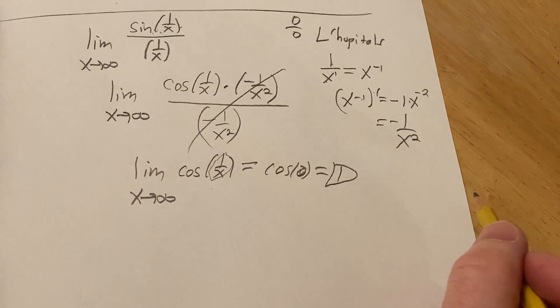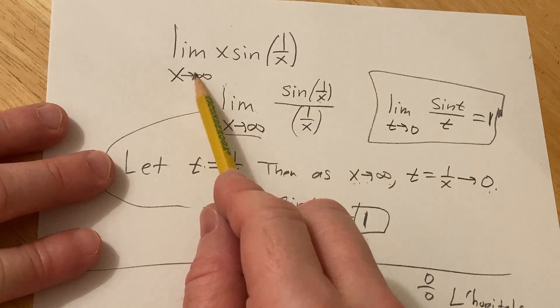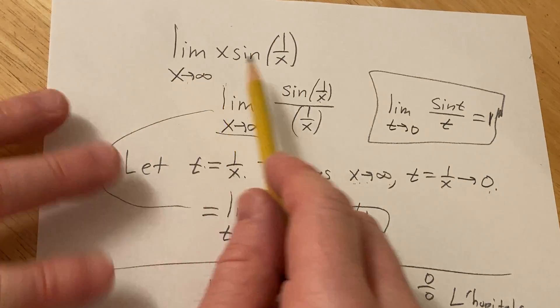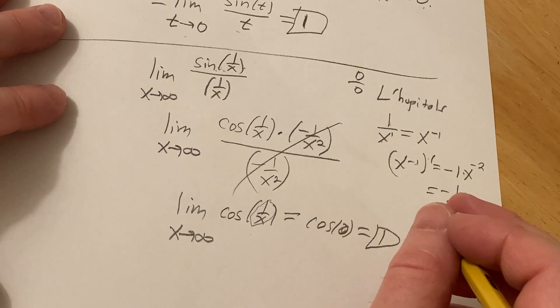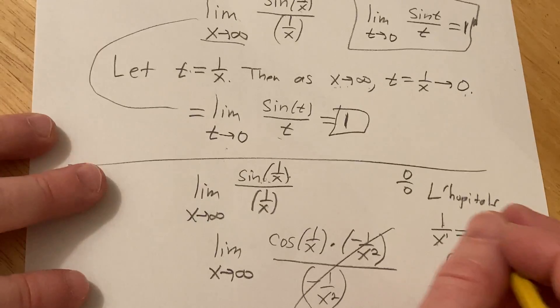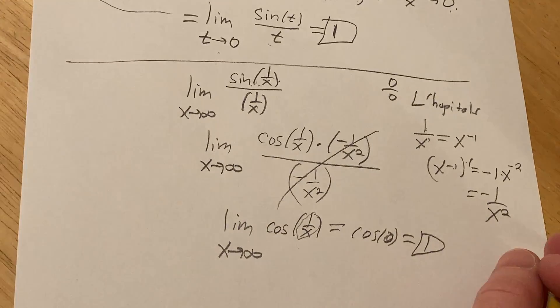So different ways of doing it. So you have two solutions now for the same problem: the limit as x approaches infinity of x times the sine of 1 over x. Yeah, kind of an interesting problem. I hope this video has been helpful. Good luck!